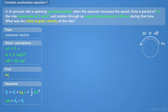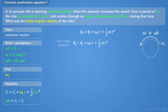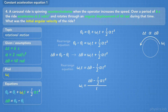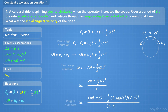Let's walk through this problem in two ways. First, let's rearrange the equations leaving the variables in, then plug in numbers at the end. We start with the constant angular acceleration equation. We subtract theta initial from both sides, replace theta final minus theta initial with delta theta, then rearrange to isolate omega initial by dividing by t. Now we plug in: delta theta is 40 radians, alpha is 2 radians per second squared, and t is 6 seconds.